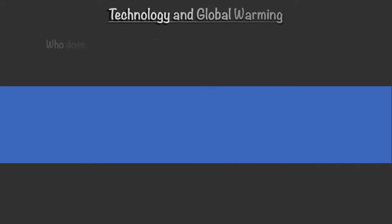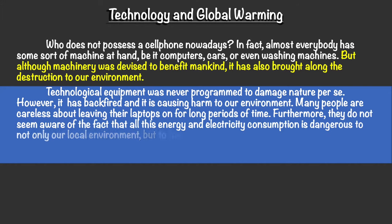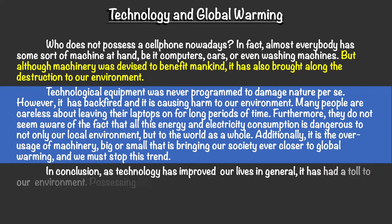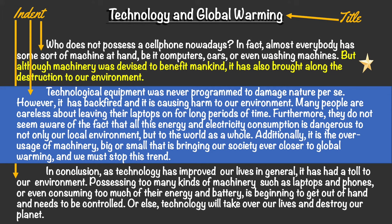Let's take a look at an example now: Technology and Global Warming. We have a thesis statement in yellow: 'Although machinery was devised to benefit mankind, it has also brought along the destruction of our environment.' The blue part will be your body paragraph. As you can see, we have the title — Technology and Global Warming — that's your thesis, and we have indents for the three-paragraph essay. The blue part is the body paragraph, and in this lesson we're going to talk about the body paragraph.